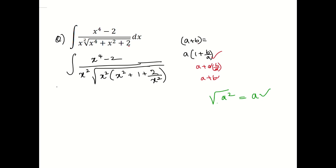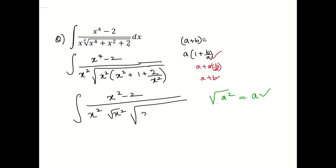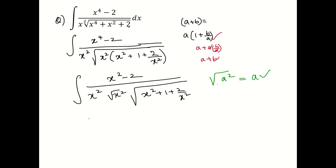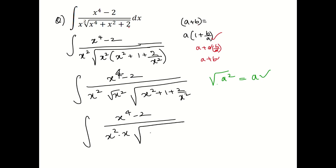This becomes the integration of (x⁴ - 2) over x² into x into root of (x² + 1 + 2/x²). Since root of x² is x, I rewrite the denominator as x² times x, which is x³, giving us (x⁴ - 2) divided by x³ into root of (x² + 1 + 2/x²).